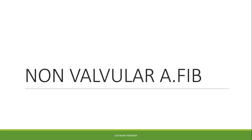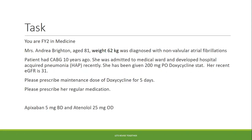Hello everyone. The next topic for this discussion writing series is non-valvular AFib. The task says: you are FY2 in medicine. Mrs. Andrea Brighton, age 81, weighing 62 kg, was diagnosed with non-valvular AFib. The patient had a CABG 10 years ago. She was admitted to the medical ward and developed hospital-acquired pneumonia. She has been given 200 mg oral doxycycline stat. Her recent eGFR is 31. Please prescribe the maintenance dose of doxycycline for 5 days and her regular medications: Apixaban 5 mg BD and Atenolol 25 mg OD.